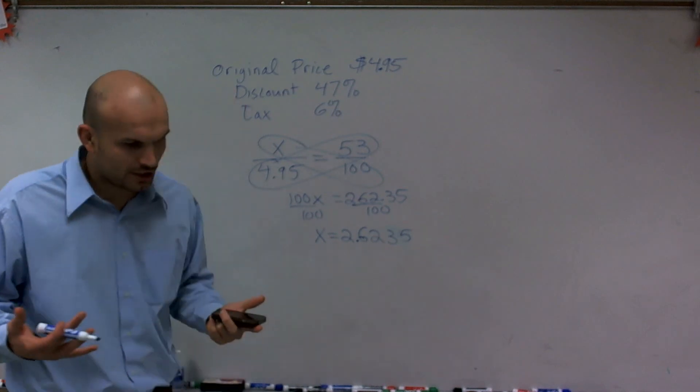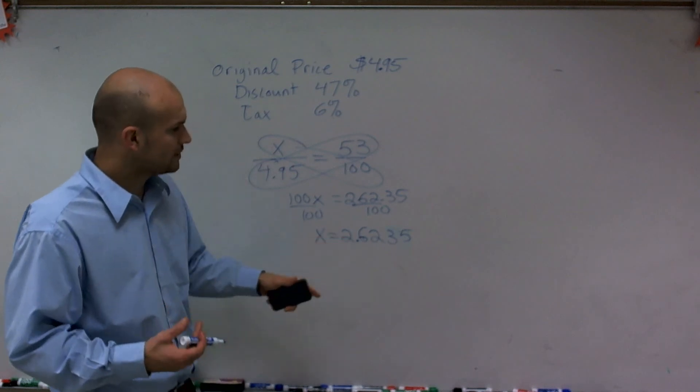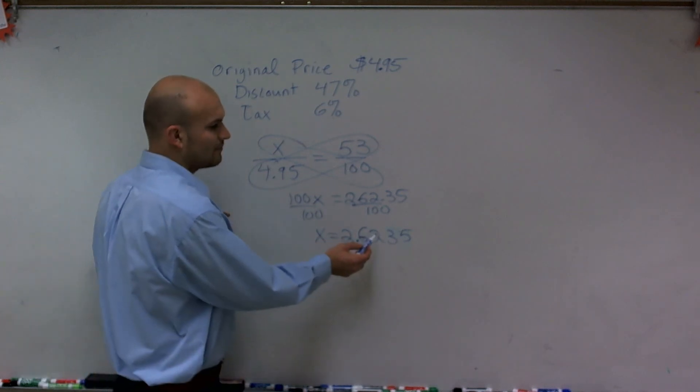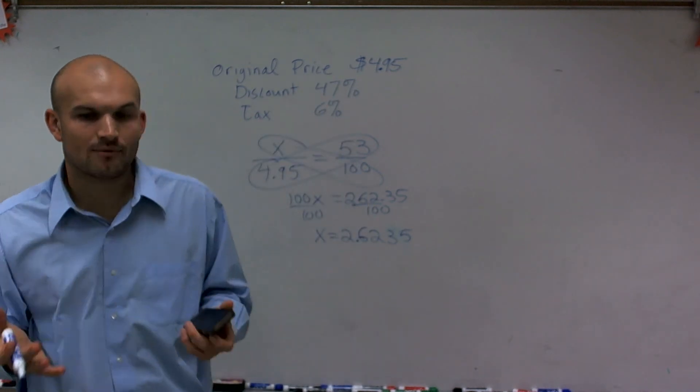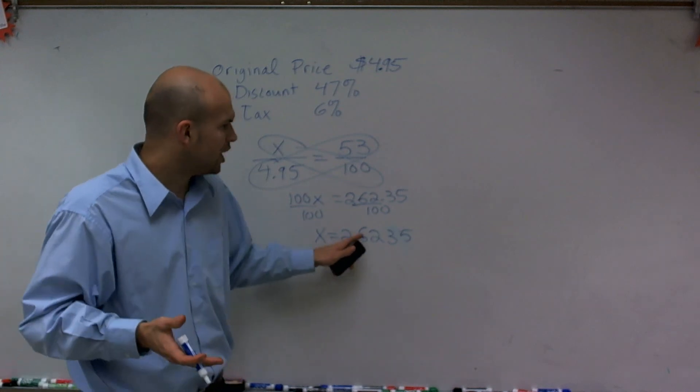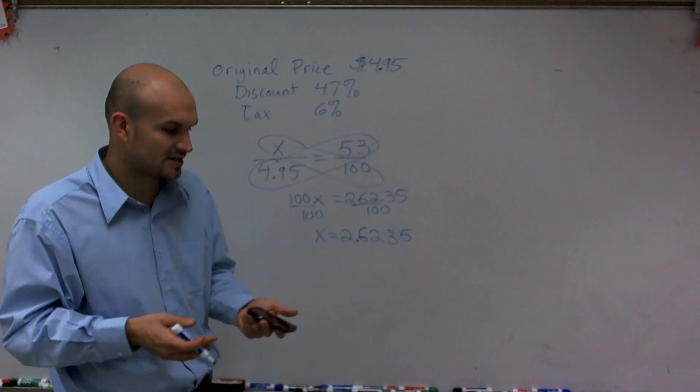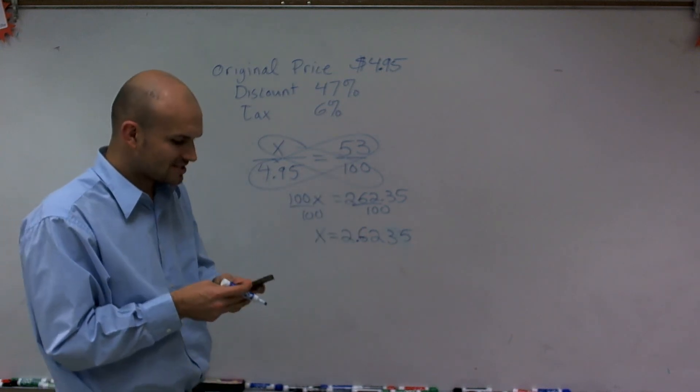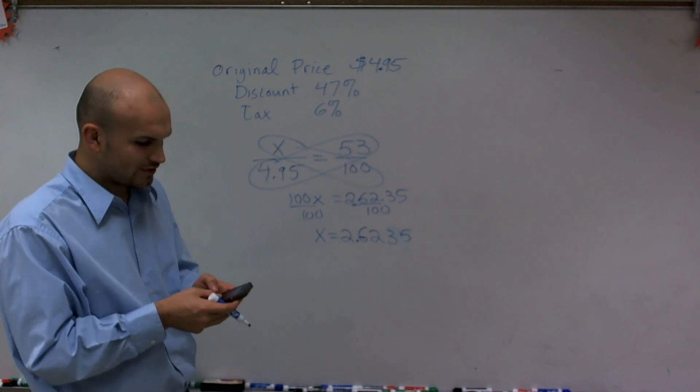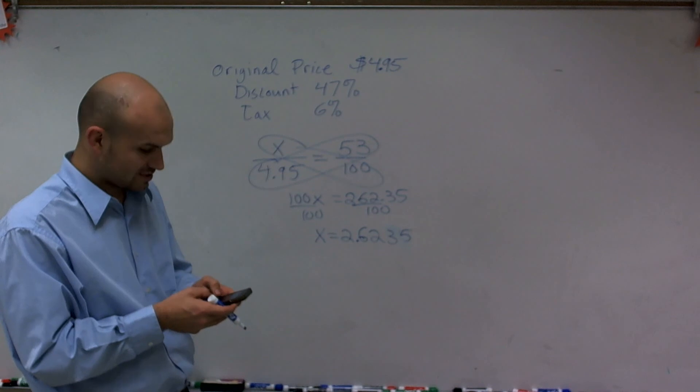Again, we could create another proportion for this, but what I'm trying to do is multiply by 6%. I want to see what is going to be the value of 6% of this price. What I can simply do, rather than doing proportions like before, is take .06 and multiply it by 2.6235.